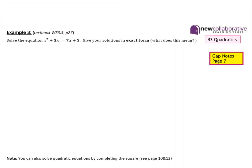Looking at the third equation from the start of the video — this one must first be rearranged. We can write x squared, take away 4x, take away 3, equals zero. This is an example of a quadratic equation that we can't solve by factorising, so we will use the quadratic formula again. Our values are a equals 1, b is negative 4, and c is negative 3.